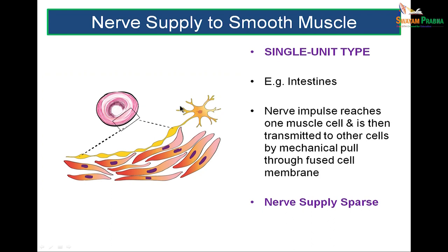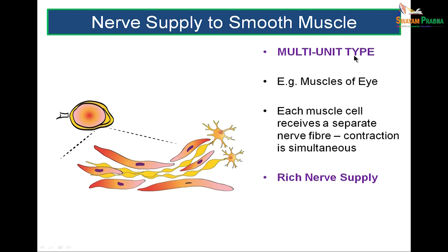Nerve supply of smooth muscle is of two types. The single unit type has fewer nerve fibers than muscle cells — as in the intestines — and the nerve impulse is transmitted from one fiber to the next. In the multi-unit type, as in the eye, precise movements are needed and there are more neurons than muscle cells, so each muscle cell receives a separate nerve fiber. Contraction is therefore simultaneous, very fast, and very precise.